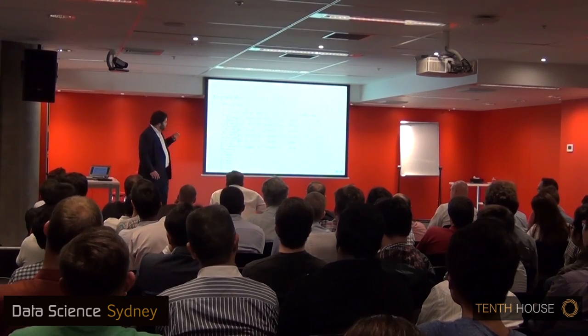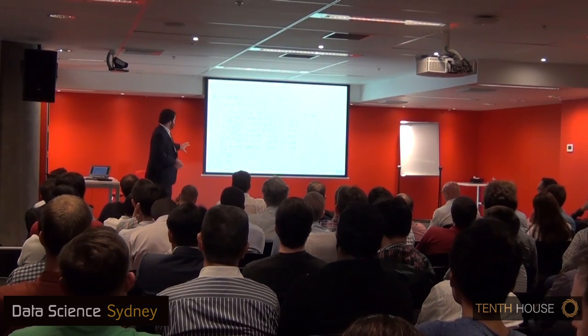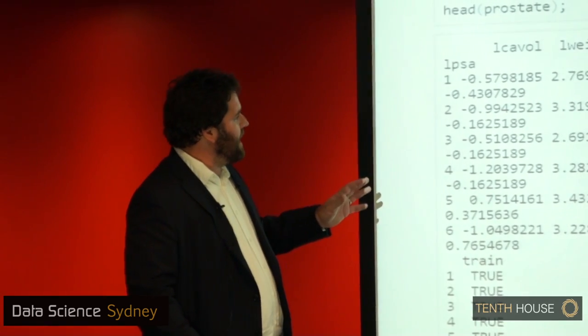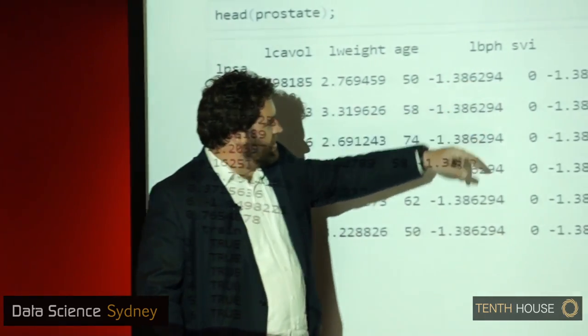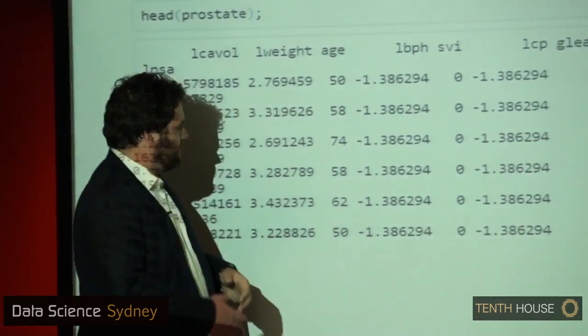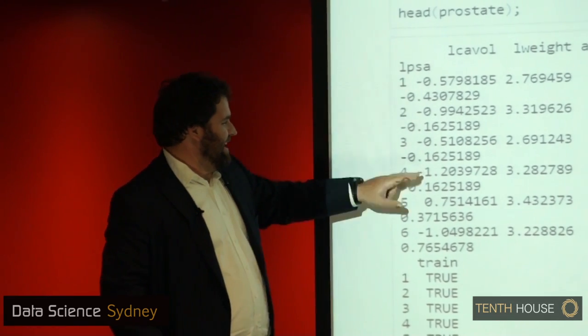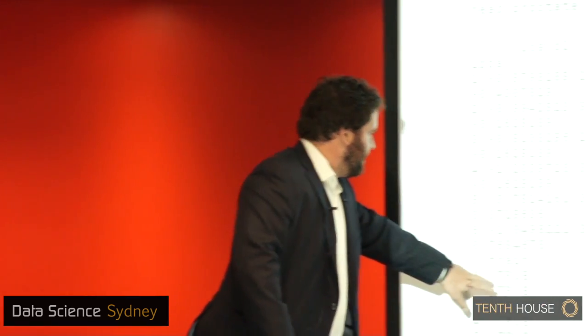I've taken inspiration from Elements of Statistical Learning and used their prostate cancer dataset. It's a relatively simple dataset with about eight predictors — log of some volume, weight, age, blood pressure, and a few others — and LPSA is the target variable I'm trying to predict. Eight predictor variables, one target variable, and they've done some splitting into train and test sets. I'm going to walk through a couple of simple examples using linear regression, since it's the simplest model and these slides were being written at about 11 o'clock last night.